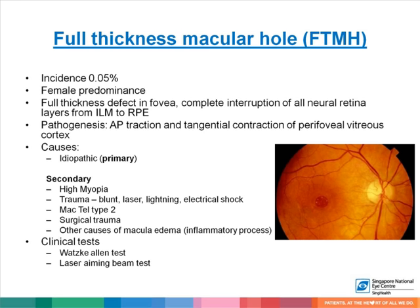Full thickness macular hole has an incidence of about 0.05% with female predominance. There is a full thickness defect in the fovea with complete interruption of all neural retina layers from the ILM to the retinal pigment epithelium. Anterior-posterior traction with tangential contraction of the perifoveal vitreous leads to macular hole formation.